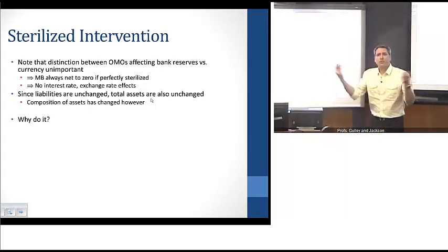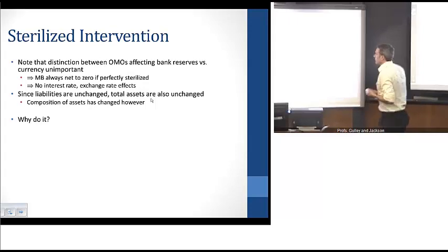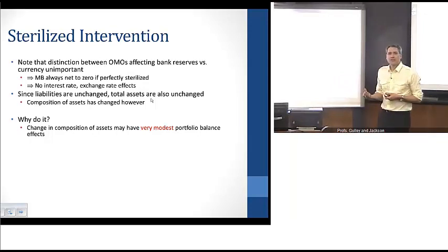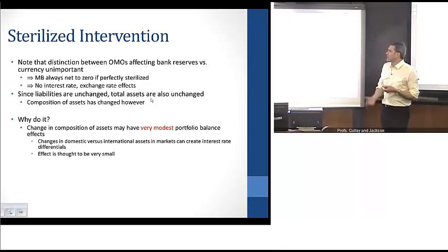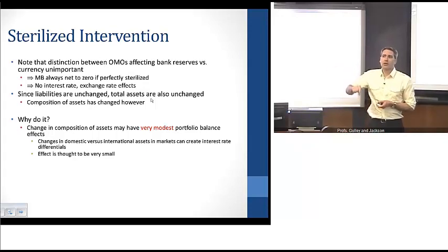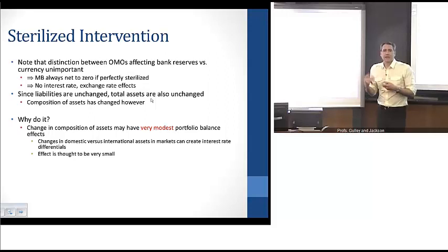A natural question is: why would central banks actually do sterilized intervention if nothing really changes other than accounting numbers? There are some reasons. First, changes in the composition of assets can have portfolio balance effects — changes in domestic and international assets in these markets can create changes in interest rate differentials. With central banks intervening heavily and changing the portfolio of assets, that can have impacts on domestic versus international interest rates, which can in turn impact exchange rates.